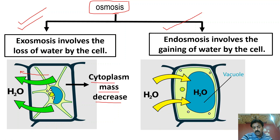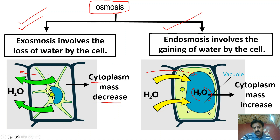Yeh jo image nazar aa rahi hai, is mein cell paani gain kar raha hai — toh pehle yeh paani cytoplasm mein aa raha hai, phir yeh plant ki large vacuole mein store ho raha hai. Toh cytoplasm ka mass increase ho raha hai. Dear students, jab bhi Exosmosis hoga, toh cell ke andar cytoplasm ya protoplasm ka mass decrease hoga.